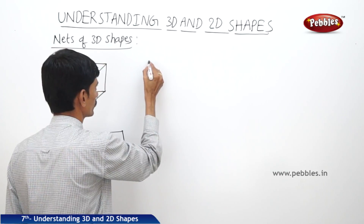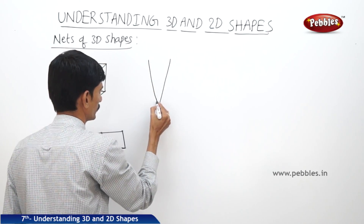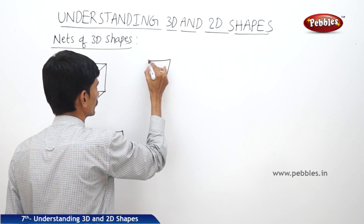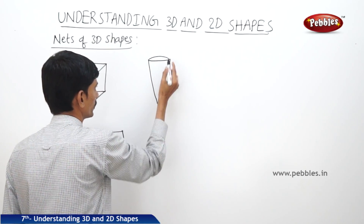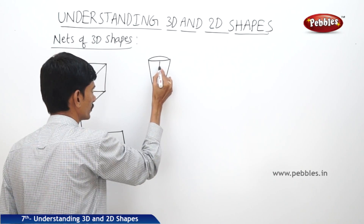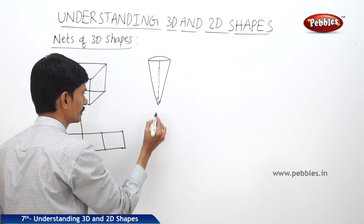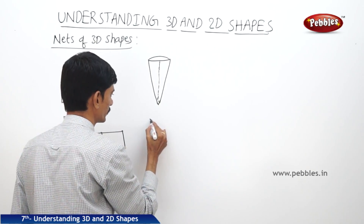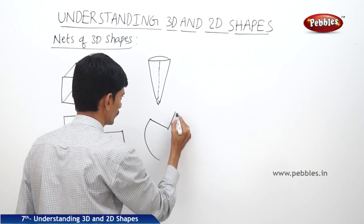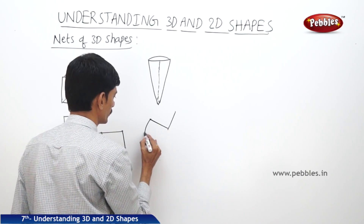If you take the cover of an ice cream cup — an ice cream cone — and cut along the lateral face vertically, then we get the shape of a sector. That sector is the net of the cone.